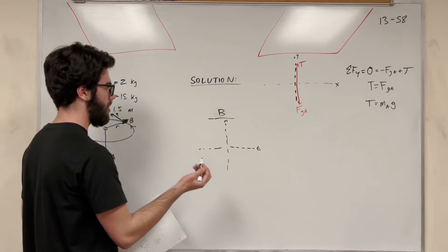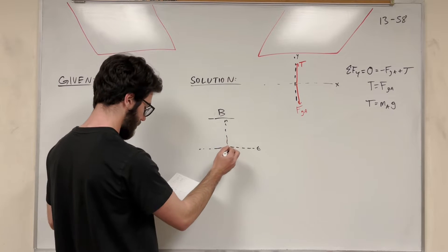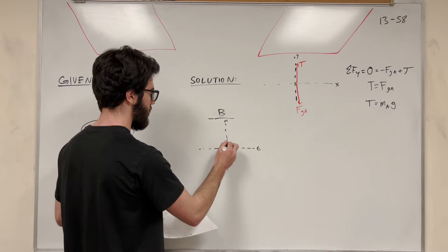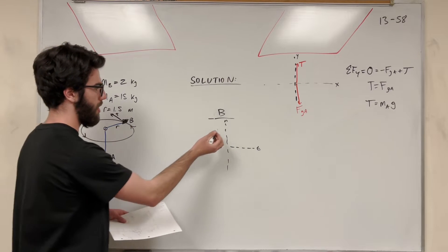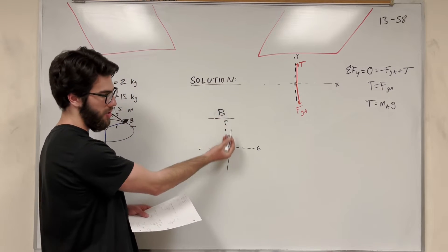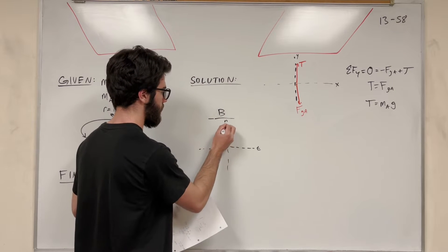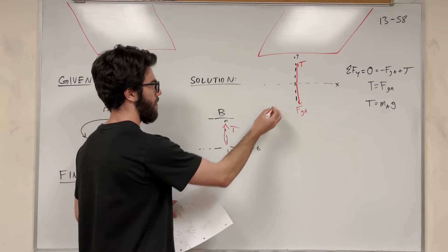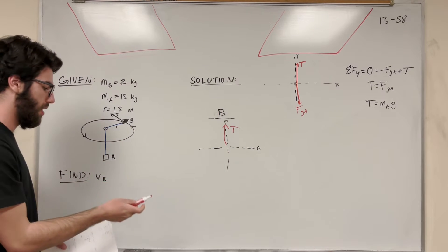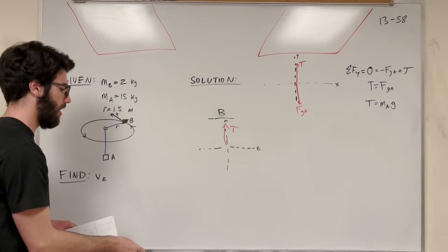So if we're looking at it like this, the thing that's happening is we have a tension force in the normal direction. This is normal, pointing inwards towards the center of the circle. We're going to have that tension force. And now this tension force is going to be equal to this tension force because it's the same rope, and there's kind of a frictionless thing going on there.